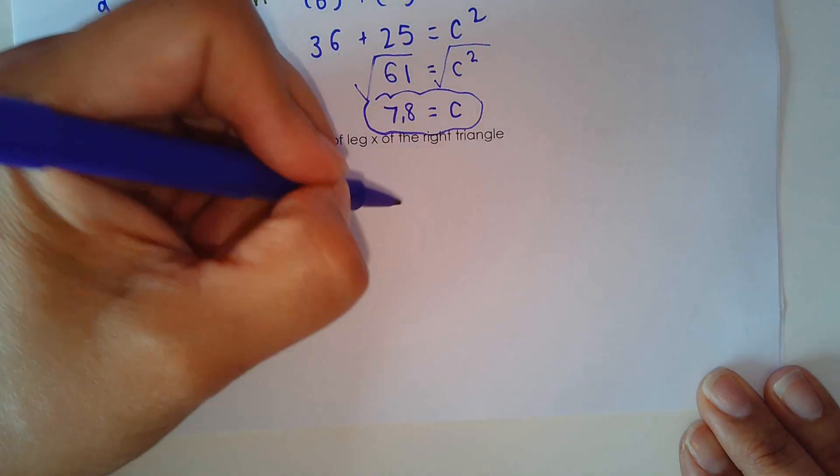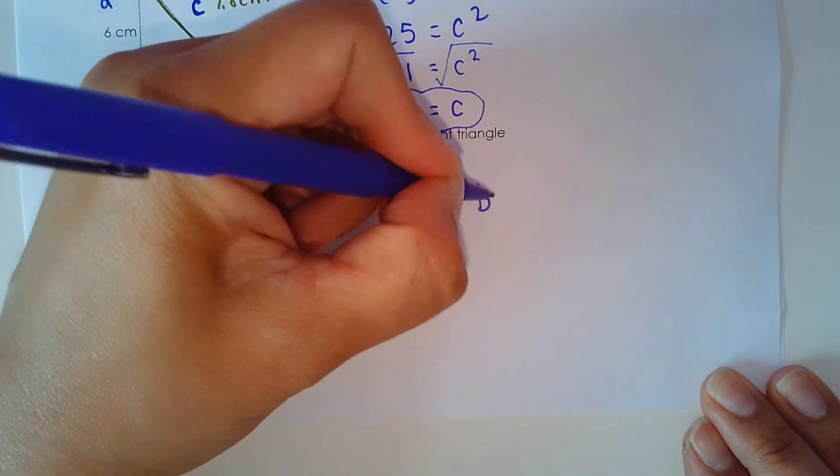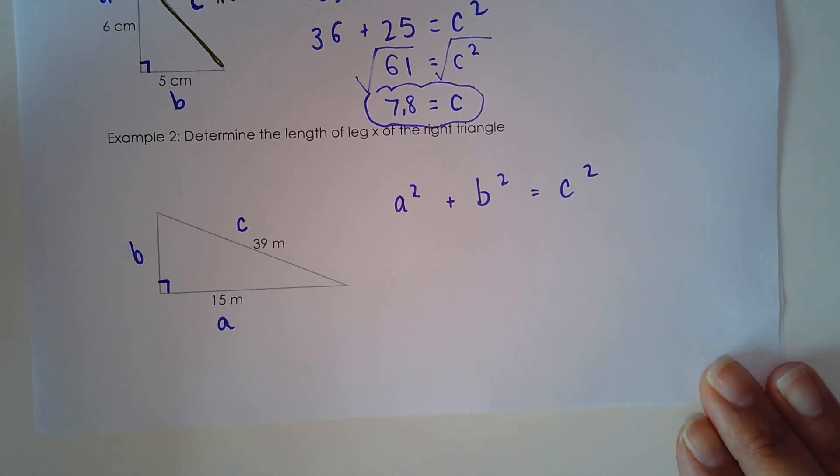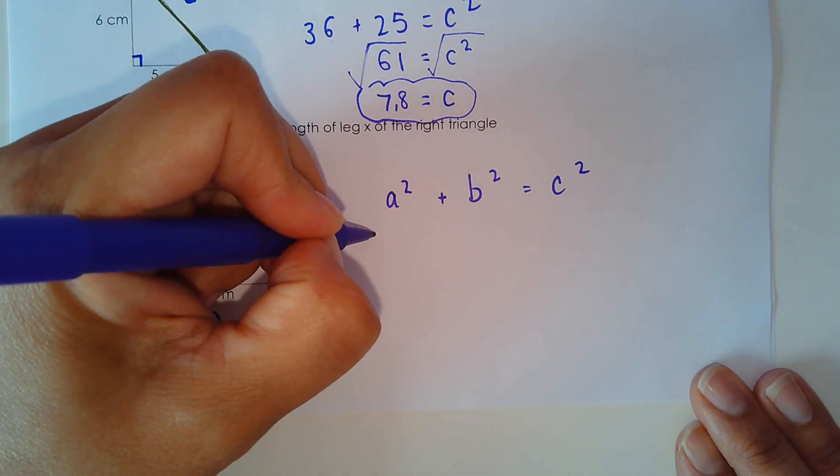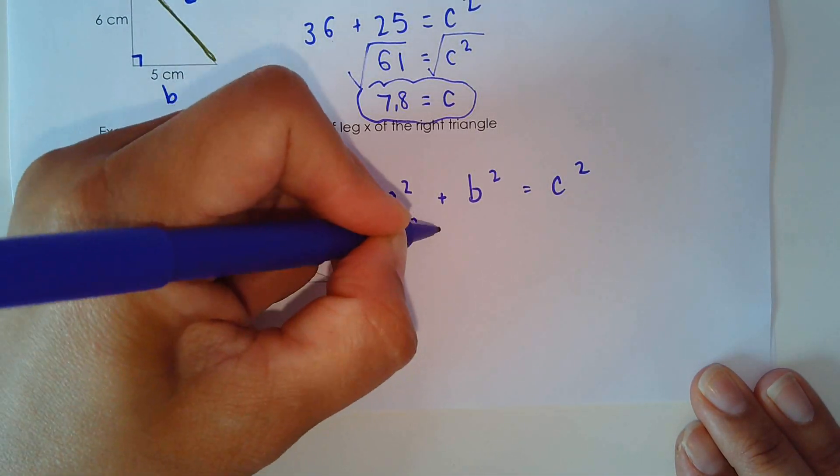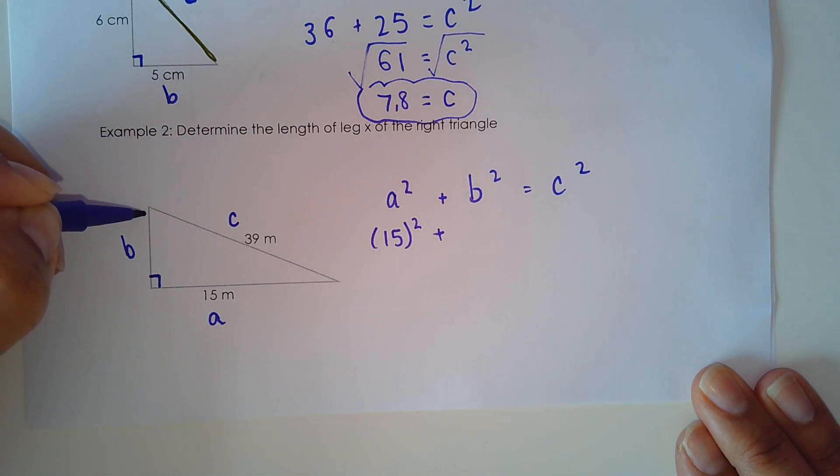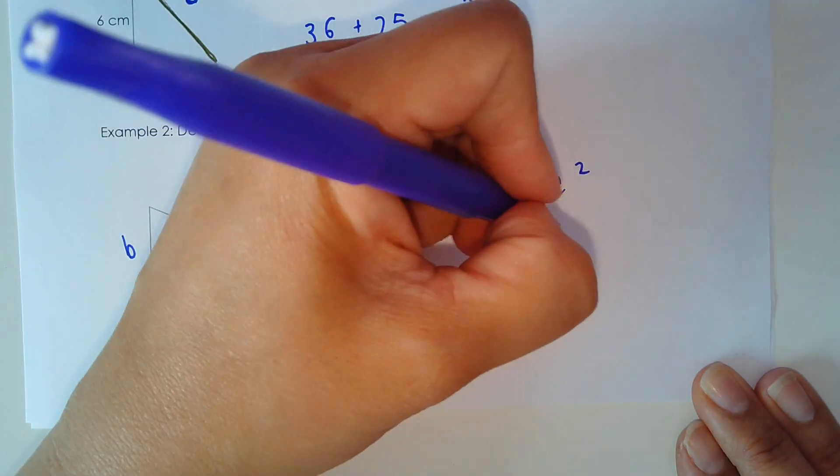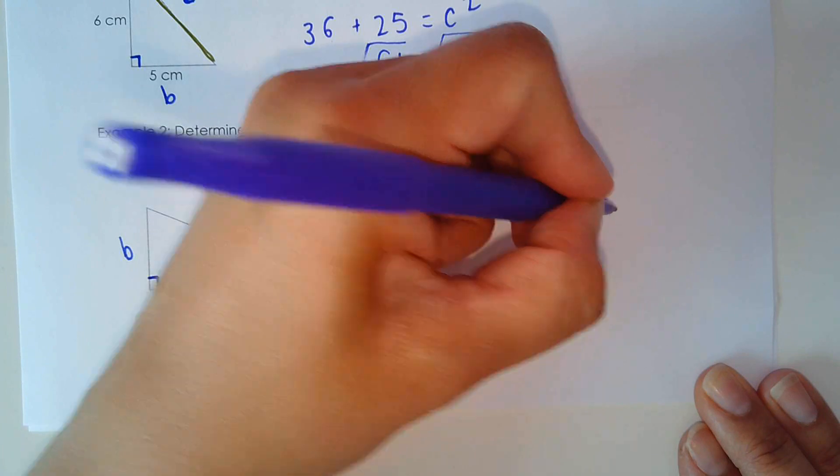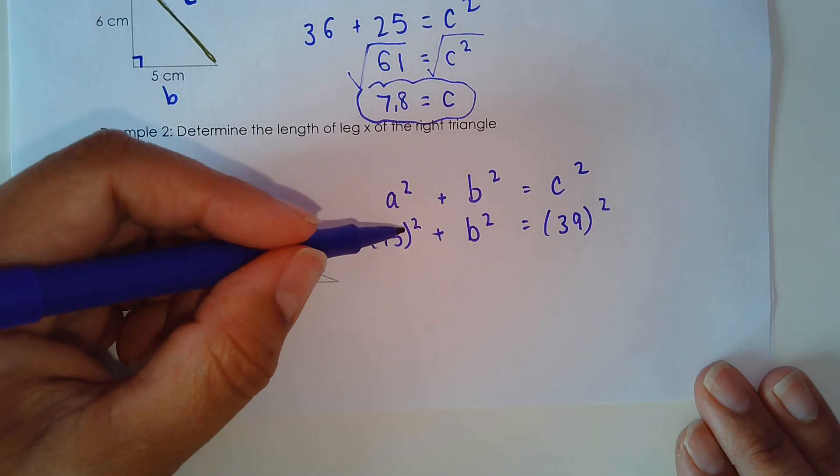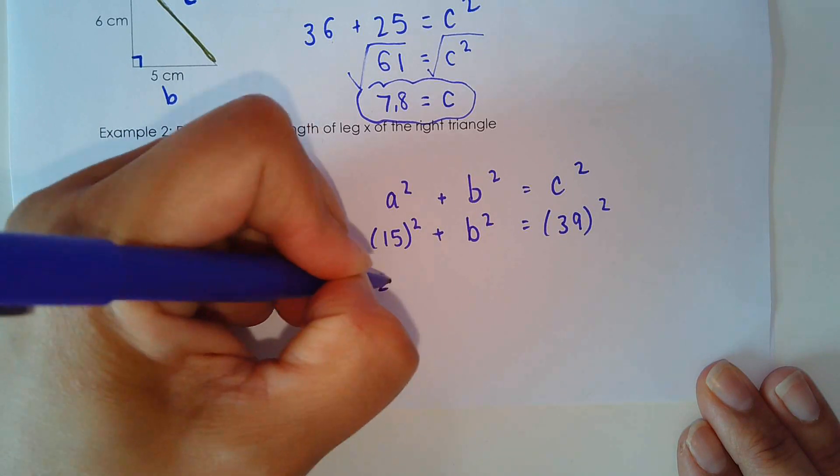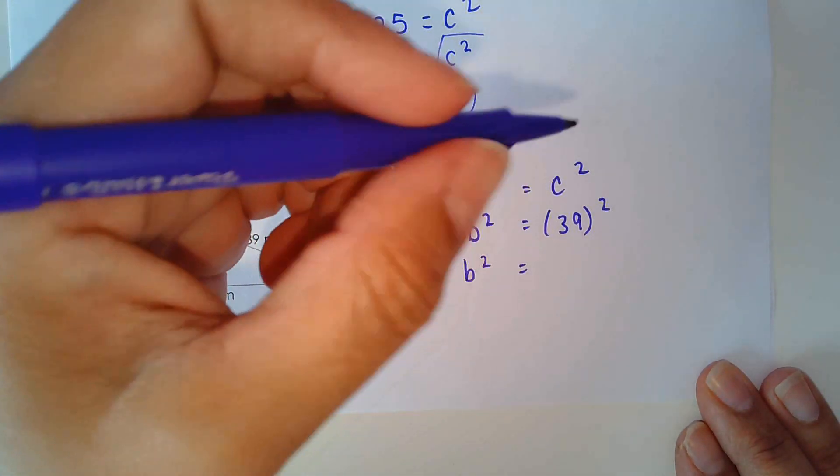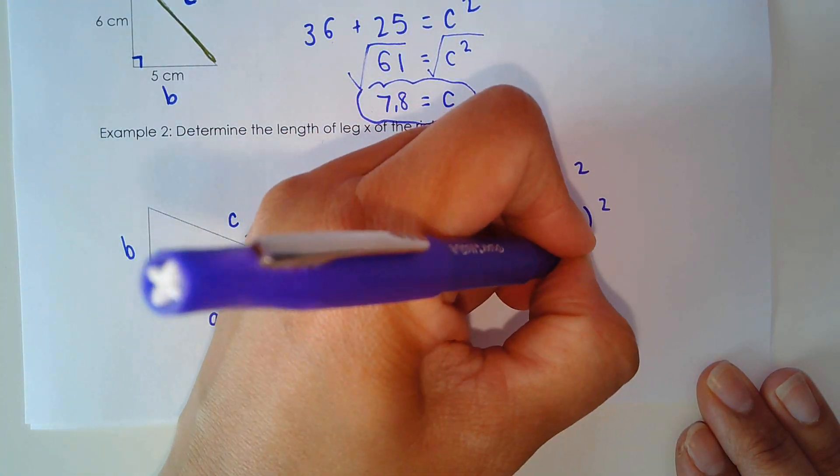So what I do is I write out the formula. A squared plus B squared equals C squared. And I plug in my values. So for A, I'm going to plug in 15. B is our unknown. So I'll just leave it as B squared. And for C, I plug in 39. So 15 squared is 225. 39 squared is 1,521.